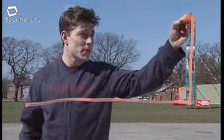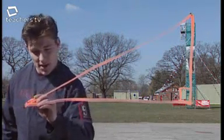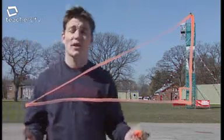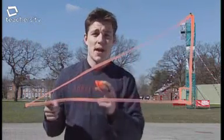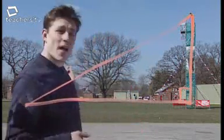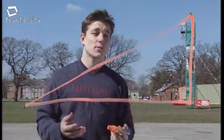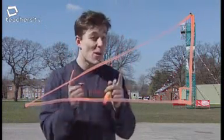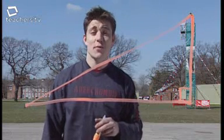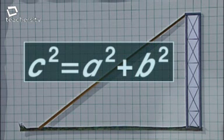If we add in the rope from here to here, what we've got is a right-angled triangle, the rope being the hypotenuse. What the army needs to know is how long that piece of rope has to be, which is actually going to be quite difficult to measure, but not if we use Pythagoras' theorem. Remember, C squared equals A squared plus B squared.